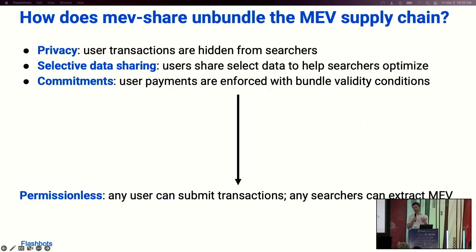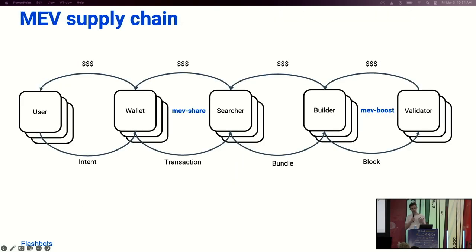Why does this work? It's similar concepts to why MEVboost works. You introduce privacy into the supply chain where users' transactions are hidden from searchers, so they're comfortable sharing information with any searcher because searchers don't get the full information set. It's programmable privacy — you share enough for searchers to do their job, but not enough for users to get front-run. The matchmaker plays the role of commitment device for searchers and enforces payments with bundle validity conditions from builders. The net result is a permissionless way for users and searchers to interact where users can get paid for their MEV.